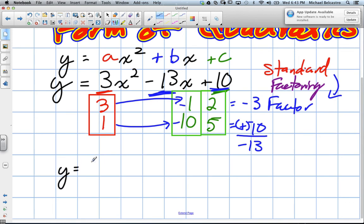So now when we go into factor form, we have our two brackets. The red numbers are going to be our first terms, and we attach an x. So I have 3x and 1x.